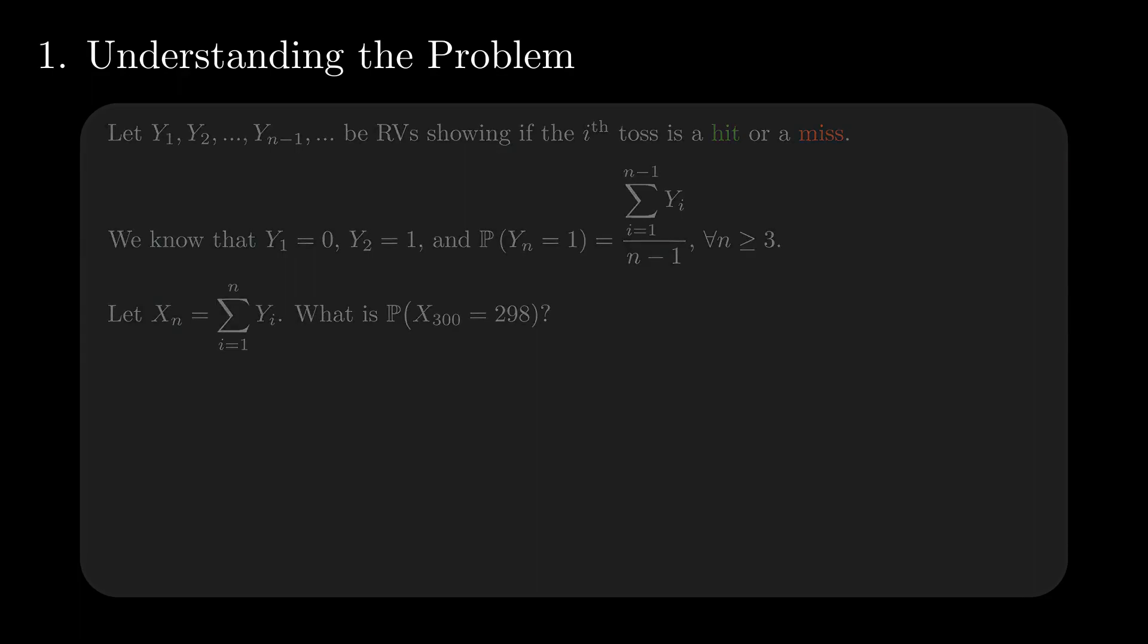We can start with a series of small-scale examples, hoping to see a pattern and extrapolate. When there are two tosses, under the imposed conditions, the only possible value for X is 1. For three tosses, the only unknown is the last one. You can either hit or miss it with probability one-half, for a total of one or two hits.